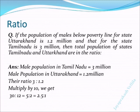From the question, the male population of Tamil Nadu is equal to 3 million, and the male population of Uttarakhand is 1.2 million. We have to find the ratio of Tamil Nadu to Uttarakhand, that is 3 is to 1.2. Multiplying both sides by 10, we get 30 is to 12.